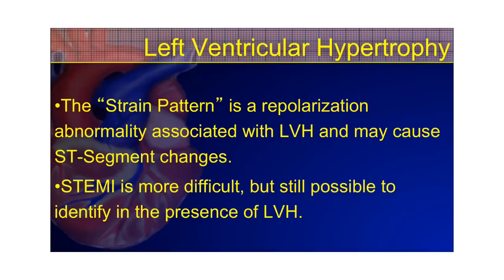The first STE mimic we're going to talk about is left ventricular hypertrophy. LVH means an enlarged, hypertrophied left ventricle — hypertrophy is enlargement of the muscle, the opposite of atrophy. Athletes may have athlete's heart, but most just have high voltage as a normal variant. The congestive heart failure patient with cardiomegaly develops LVH and will present with a strain pattern, which is a repolarization abnormality associated with LVH that can cause ST segment changes. STEMI is more difficult, but still possible, to identify in the presence of LVH.